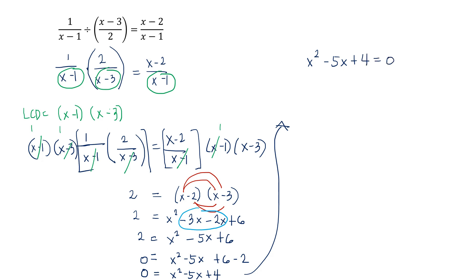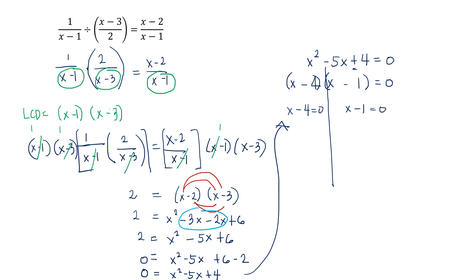By the reflexive property of equality, we rewrite as x squared minus 5x plus 4 equals 0 and factor it. It's a factorable trinomial: first term factors as x and x; last term 4 can be 4 times 1. Since the last term is positive and the middle term is negative, both signs must be negative. So the factors are (x minus 4)(x minus 1) equals 0. By the zero product property, x equals 4 and x equals 1.